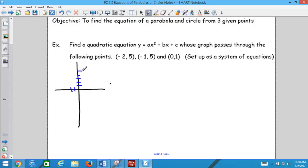It says find a quadratic equation y = ax² + bx + c whose graph passes through the following points: (-2, 5), (-1, 5), and (0, 1).